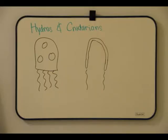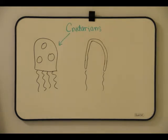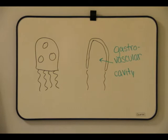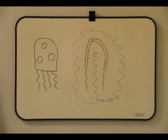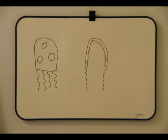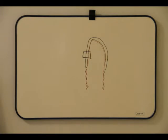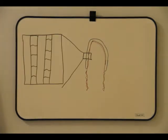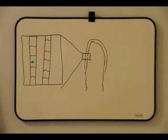Invertebrate Circulation: Hydras and other cnidarians have relatively simple body plans, and they have a body that is only two cells thick which encloses the gastrovascular cavity. The fluid in this cavity is continuous with the outside environment. Since the hydra is only two cells thick, diffusion takes place over a short distance.